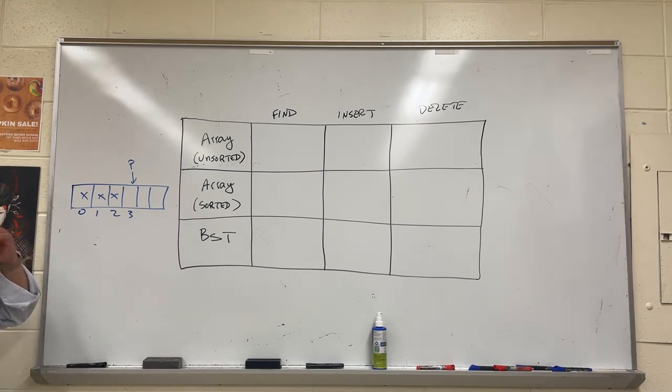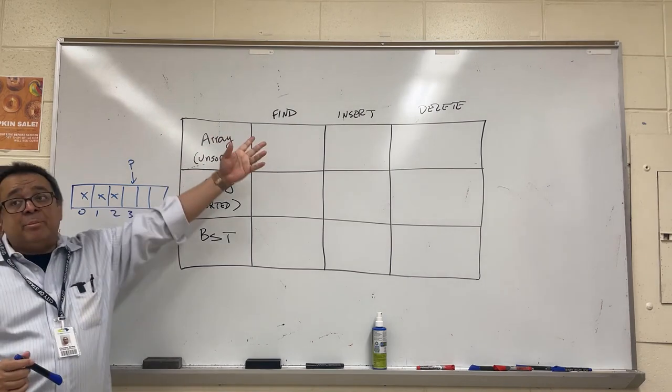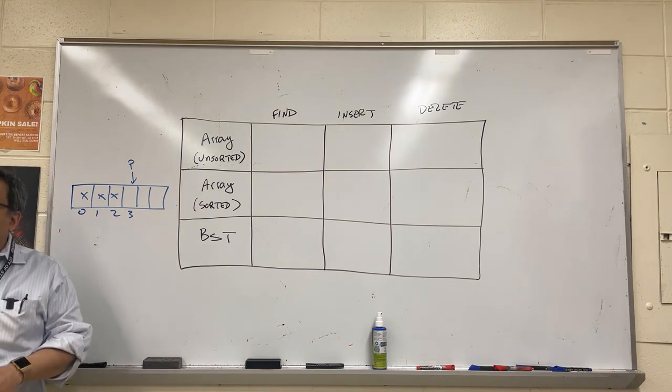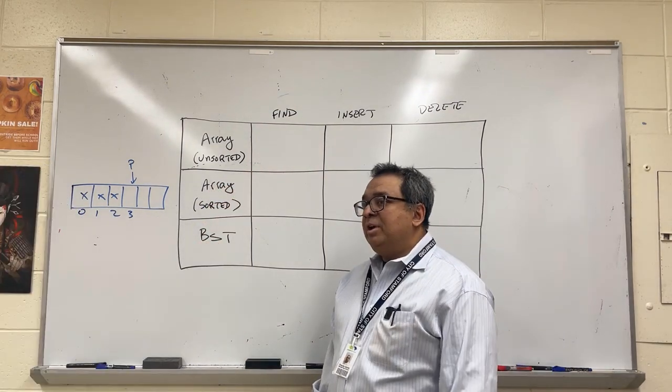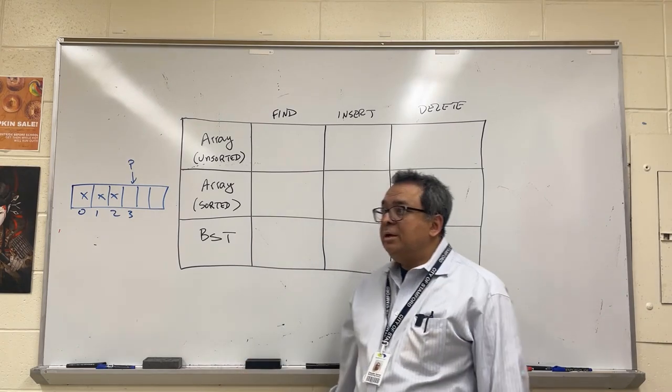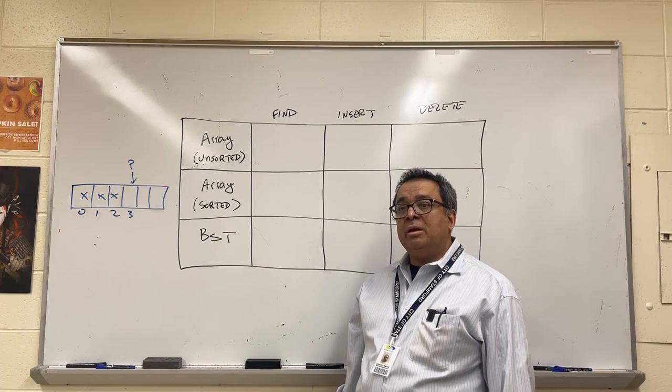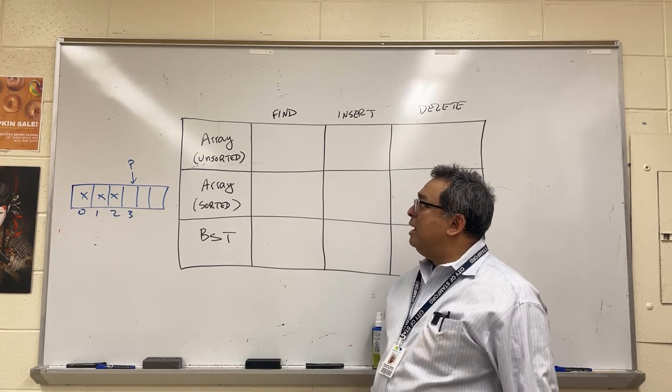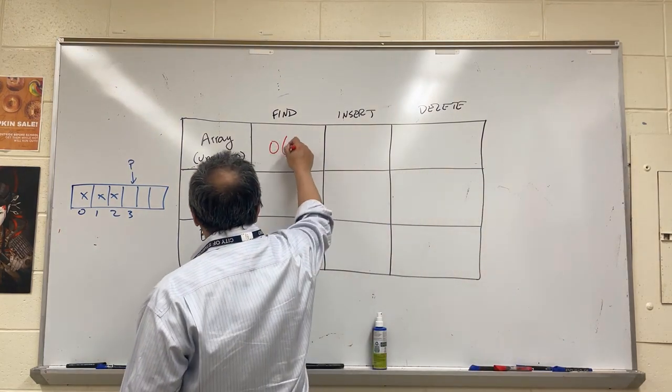So now if we have an unsorted array, imagine that the data here are completely unsorted and we're looking for a particular piece of data. How long is that going to take? What's the algorithm going to be? What's the name of the algorithm that we're going to use to search for something? Linear search. And what would be the big O of that linear search? So here you can see it's going to be O of n.